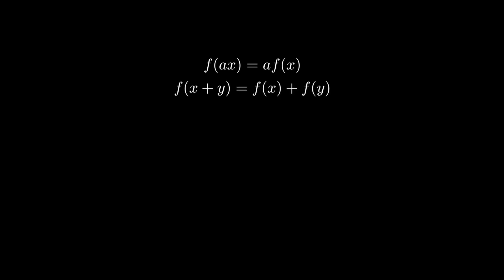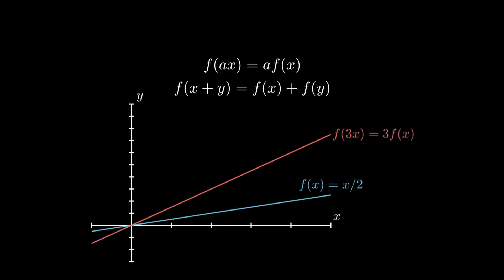Now, this has a really nice geometric interpretation. Geometrically, linear means straight line. So if we have a function f(x) equals one half x, since this is a straight line, we also know that f(3x) equals 3 times f(x), or three halves x, which is just another straight line.